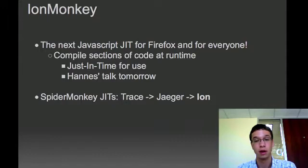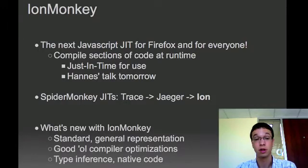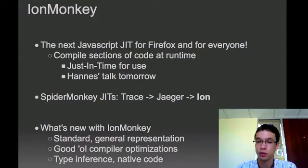TraceMonkey, JaegerMonkey, and now IonMonkey. And what's new with IonMonkey is that it has a standard general intermediate representation of code, so we can run good old tried-and-true compiler optimizations on our JavaScript code. It also has type inference and compiles to native code like its predecessors, which is a boost for speed as well.